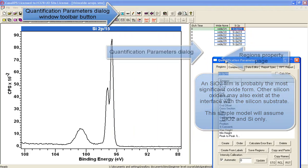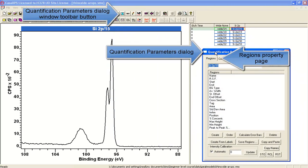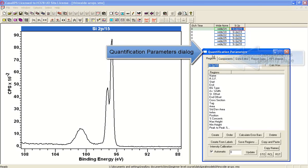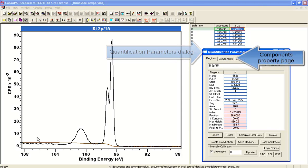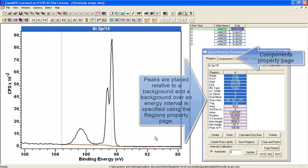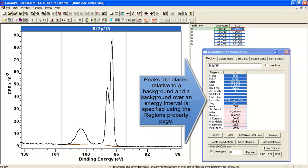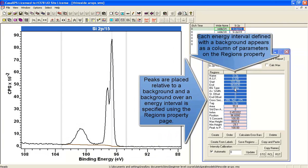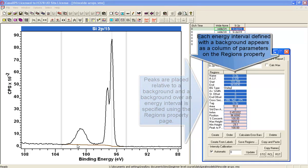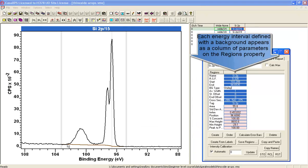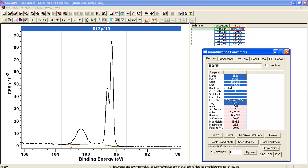The procedure will be as follows. You bring up the quantification parameters dialog window, and the first thing is to create yourself a background. The background has come in, in this case as a default of Shirley, and the peak model in terms of components, component peaks that is, will appear on top of the background.